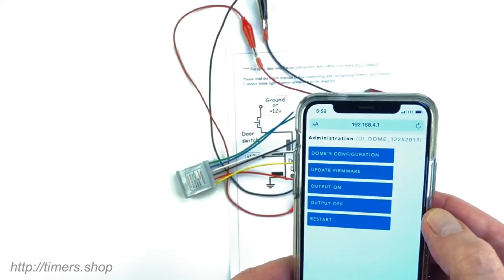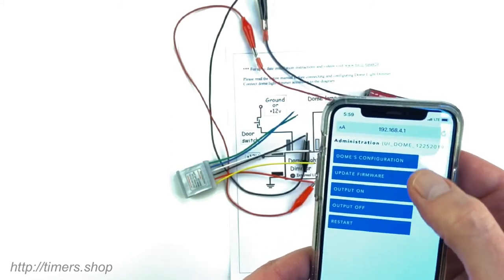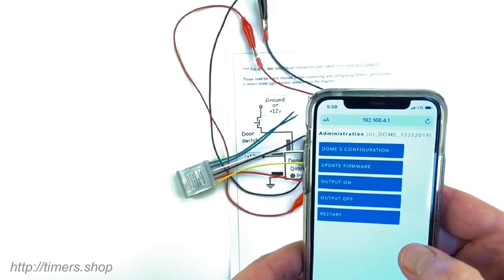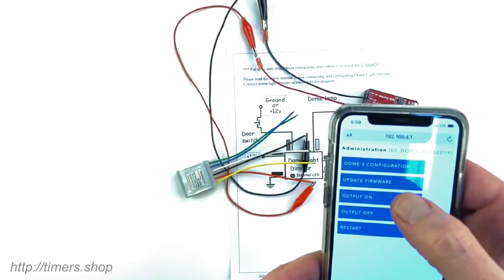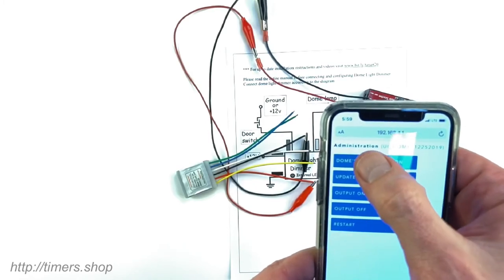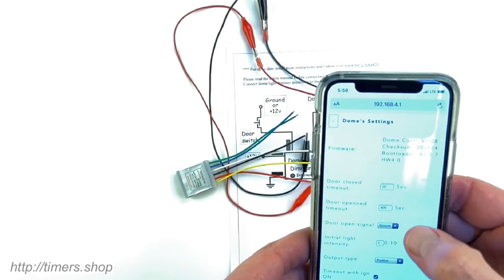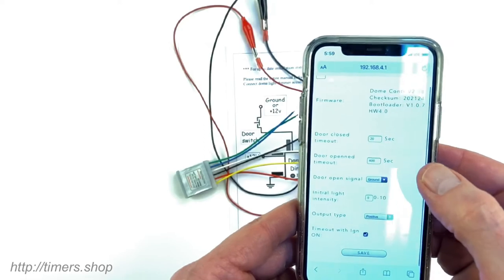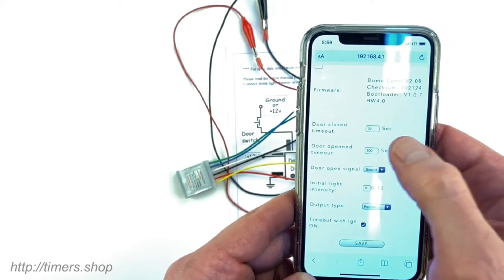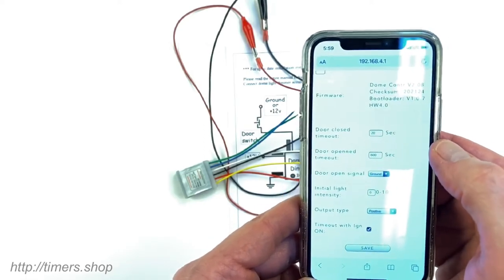Here's our dome configuration menu. This is the initial administration menu. We can go to dome configuration, and this is all the configurations that you can change. The door closed timeout is currently set to 20 seconds.